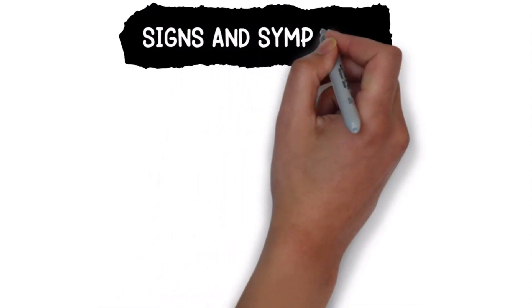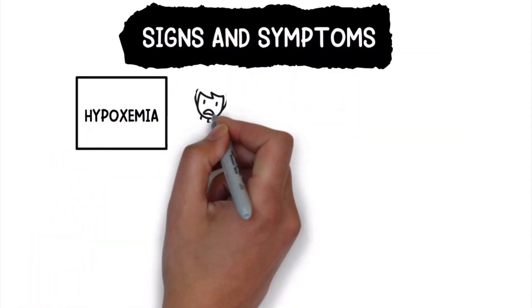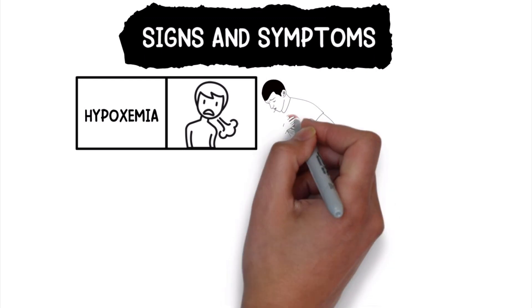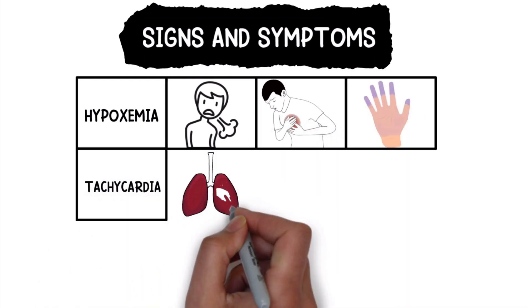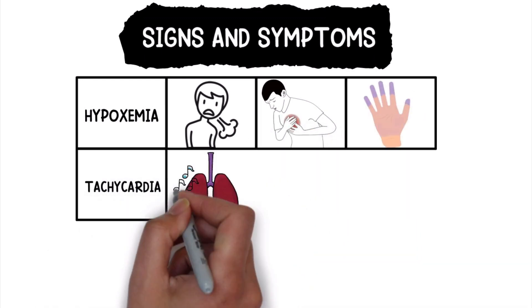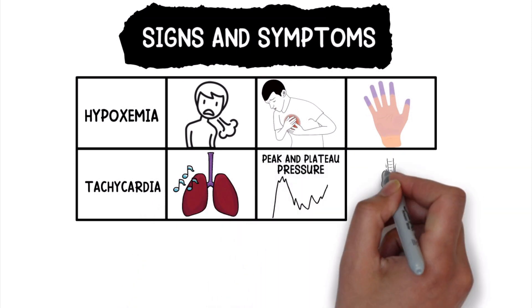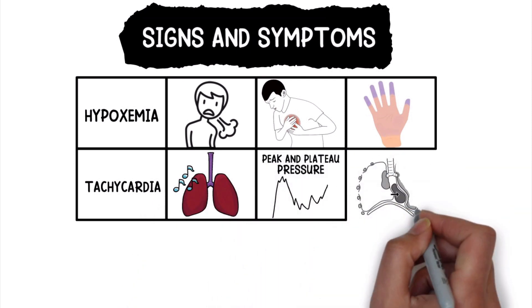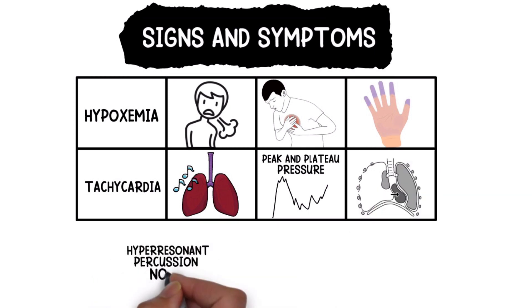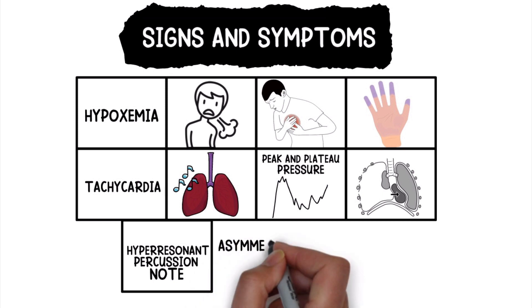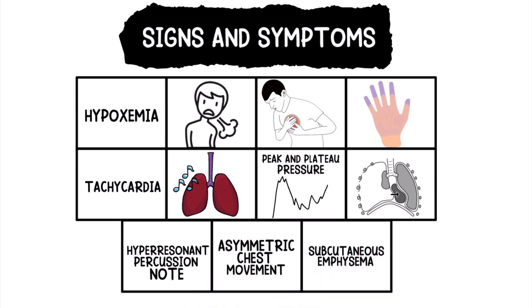The signs and symptoms of a pneumothorax include hypoxemia, dyspnea, chest tightness, cyanosis, tachycardia, decreased breath sounds over the affected side, sudden increase in peak and plateau pressure, mediastinal and tracheal shift from the affected side, hyperresonant percussion note over the affected side, asymmetric chest movement, and subcutaneous emphysema.